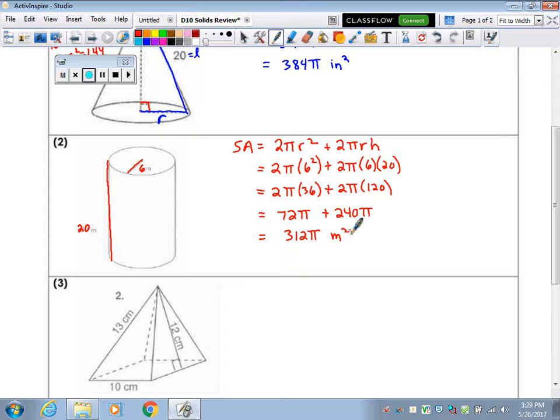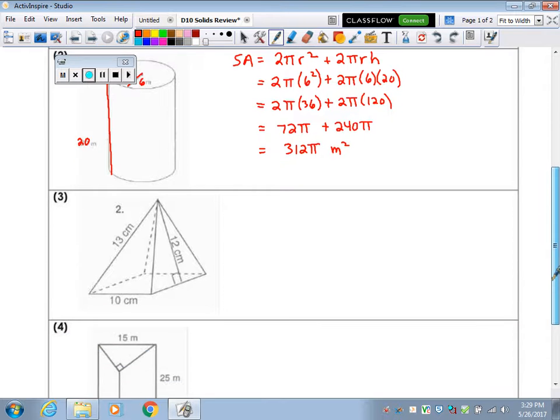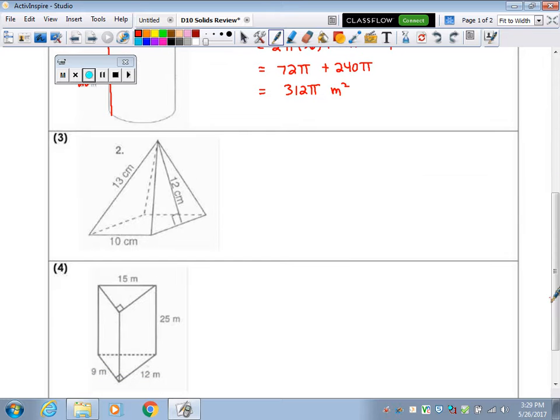And units are, again, length squared, length unit squared. So in this case, meters squared. So that's the surface area of the cylinder. The surface area of a pyramid is a little trickier.